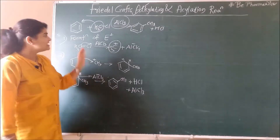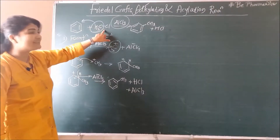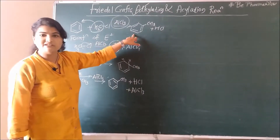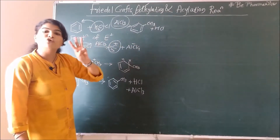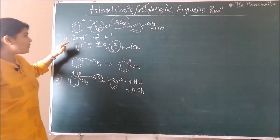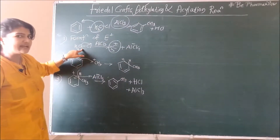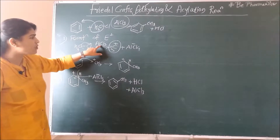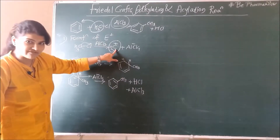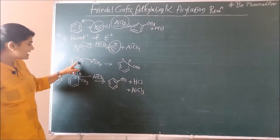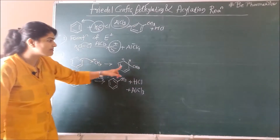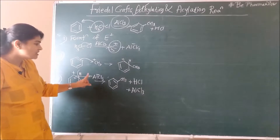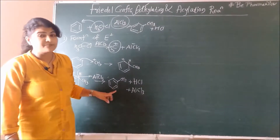So what is Friedel-Crafts alkylation? Benzene reacts with alkyl halide in presence of AlCl3 to give alkyl benzene. The mechanism involves three steps: the alkyl halide reacts with AlCl3 to form an electrophile; this electrophile attacks on the benzene ring to form a carbonium ion, which then loses a proton to give you alkyl benzene.